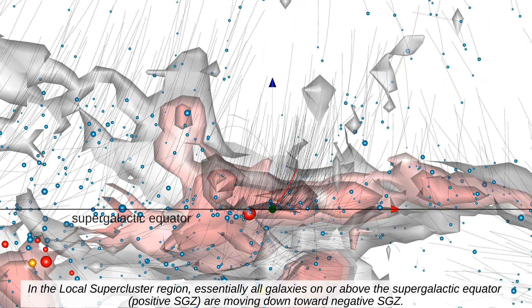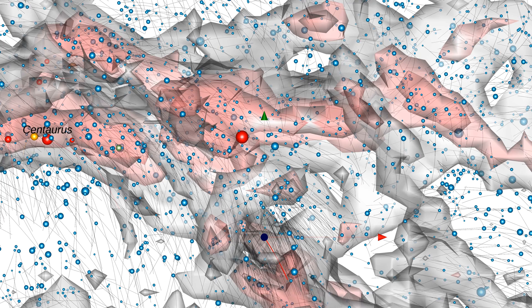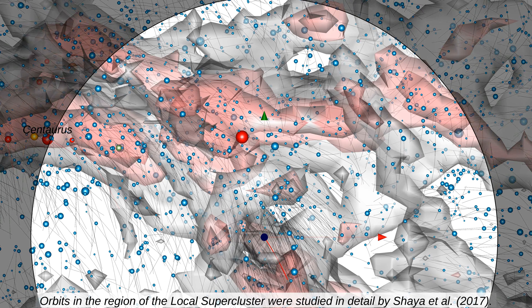In the local supercluster region, essentially all galaxies on or above the supergalactic equator — positive SGZ — are moving down toward negative SGZ. In this region, galaxies flow toward positive SGY and negative SGX, the direction toward the core of Laniakea. Orbits in the region of the local supercluster were studied in detail by Shea et al. 2017.